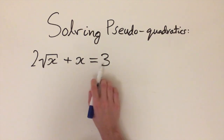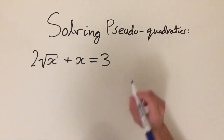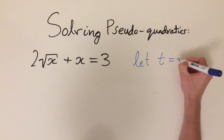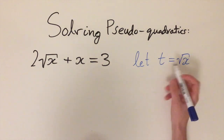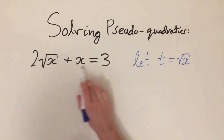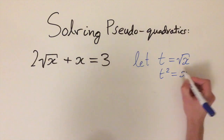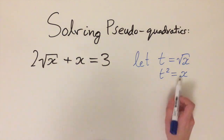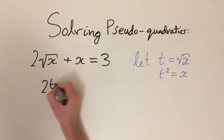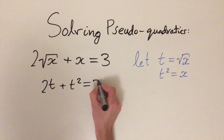As an example, we have 2 times the square root of x plus x equals 3. This isn't a quadratic equation — there's no x squared term, there's a square root term. But if we use a substitution, letting t equal the square root of x, we can transform this equation. Since t equals √x, squaring both sides gives t squared equals x, and substituting in gives us 2t plus t squared.